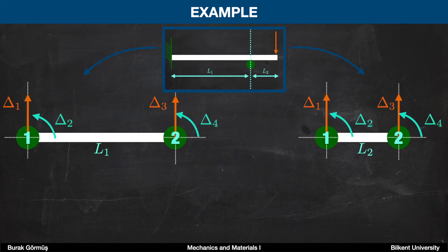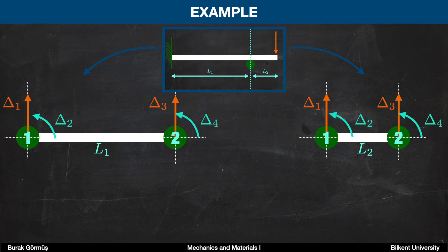Each beam element has its own unknowns in their local coordinates. For the L1 element, delta one and delta two are equal to zero because it's a fixed end. Besides, delta three is zero because there is a roller and deflection is zero. The only unknown for the L1 element is delta four — the slope at node two. For L2, delta one is zero due to the roller and delta two is unknown.